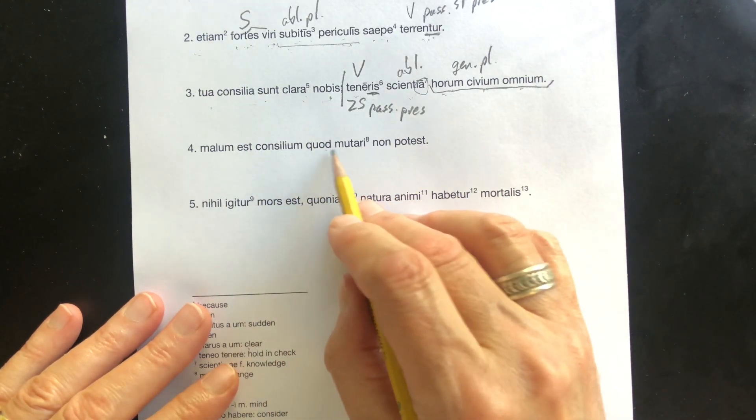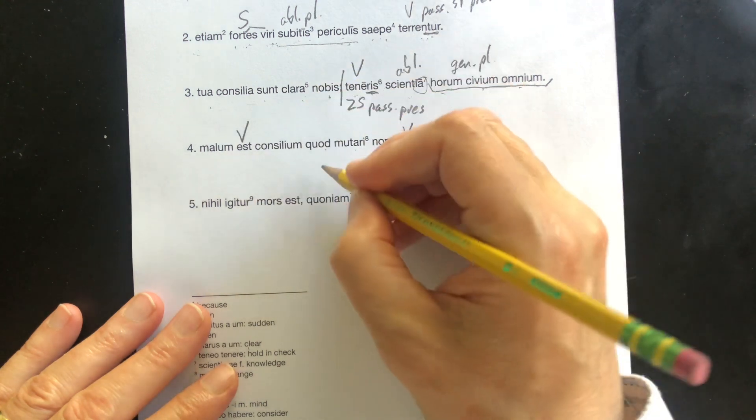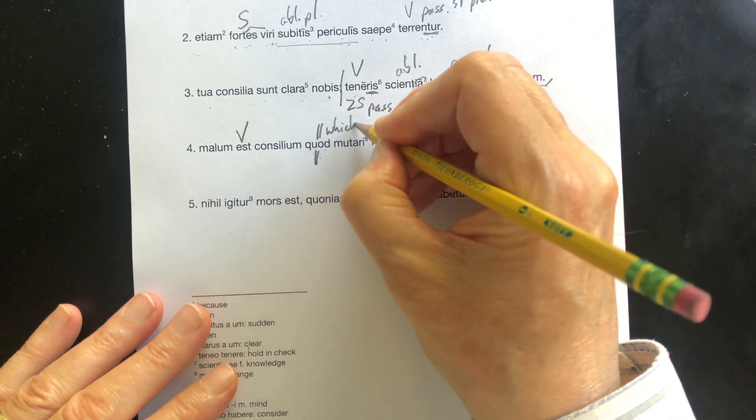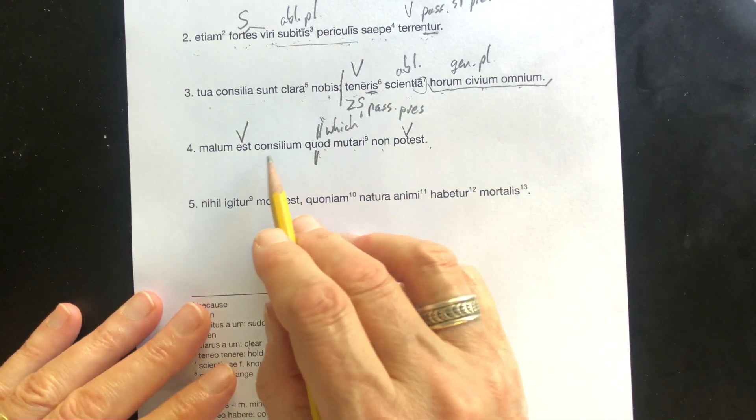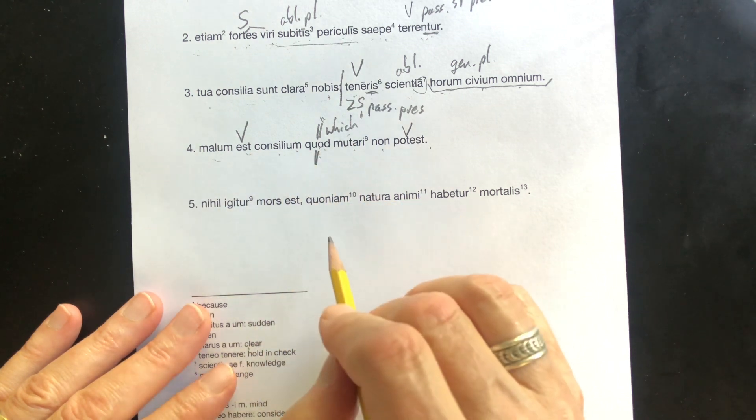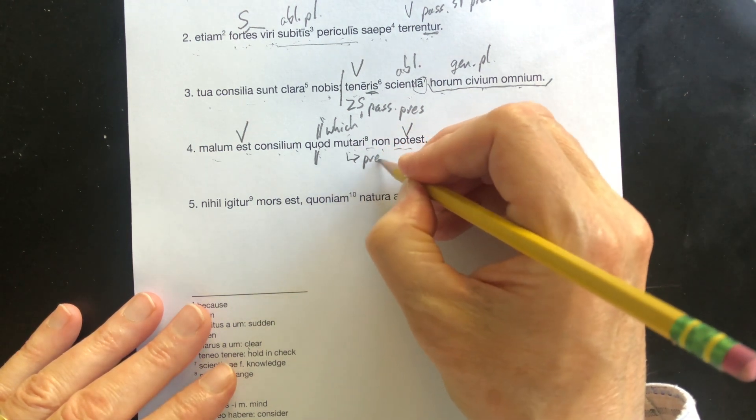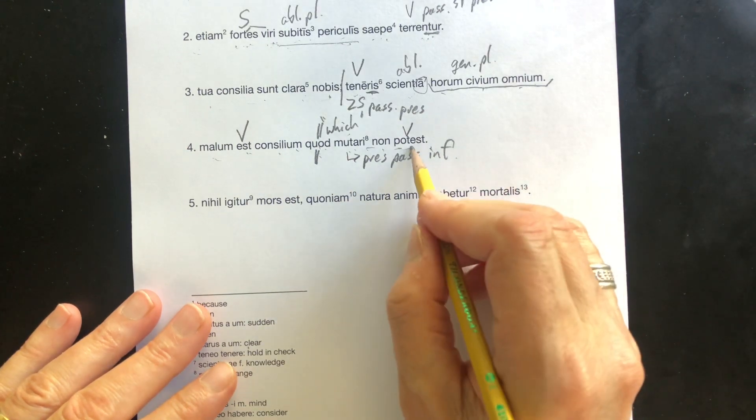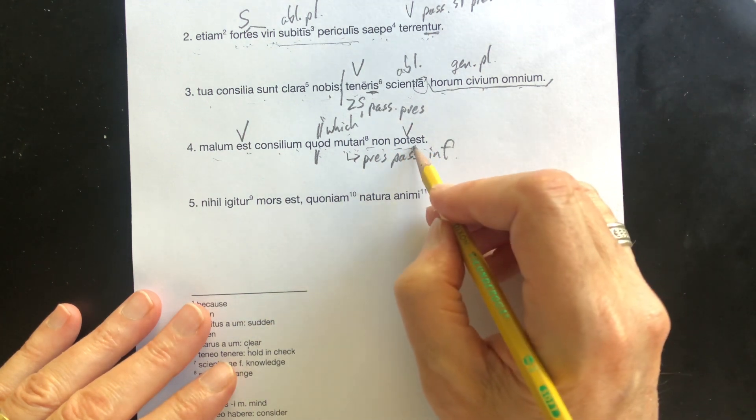Malum est consilium quod mutare non potest. Okay, I see a verb here. Now, quod, this is a relative pronoun, it means which. I haven't taught you that yet. That's in chapter 17, I believe. Bad is a plan. All right, kind of makes sense. Bad is a plan which is not able to be changed. So mutare, present passive infinitive. Potest always takes a complementary infinitive. On its own, it doesn't really mean much. Potest, he is able. He's able to what?